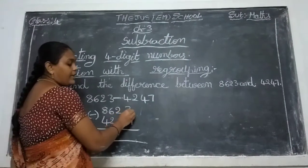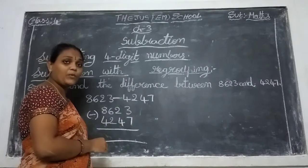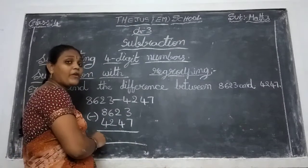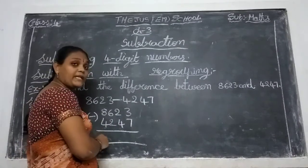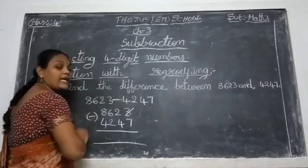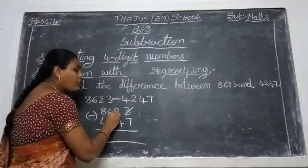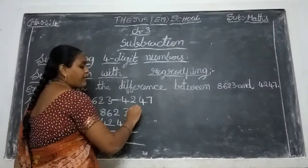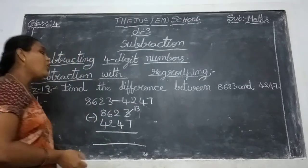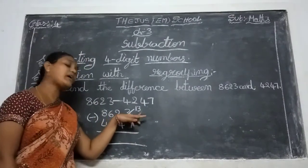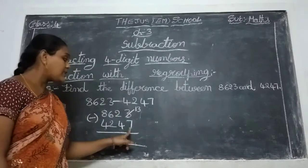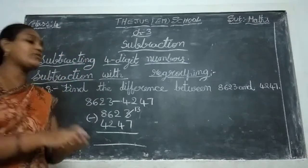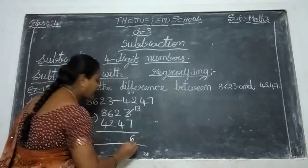First, 3 minus 7 — is it possible? No. Why? Because 3 is the small number and 7 is the big number. Small number minus big number is not possible. So this 3 is taking a borrowing of 1 from the 2 next to it. That 1 means 10, so 10 plus 3 becomes 13. Now close your fingers: 7 after becomes 13 — count 8, 9, 10, 11, 12, 13. How many fingers are open? Six. So write the answer 6 here.